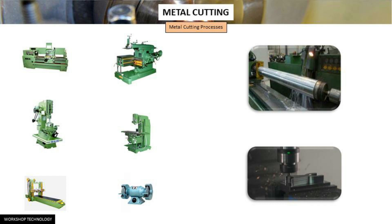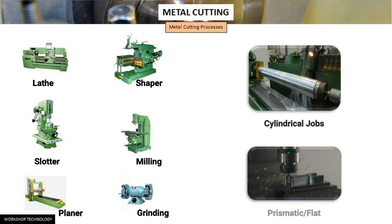Machine tools involve various kinds commonly named as lathe, shaper, planer, slotter, drilling, milling, and grinding machines. The machining jobs are mainly of two types: cylindrical and flat or prismatic. Cylindrical jobs are generally machined using lathe, milling, drilling, and cylindrical grinding. Whereas prismatic jobs are machined using shaper, planer, milling, drilling, and surface grinding.